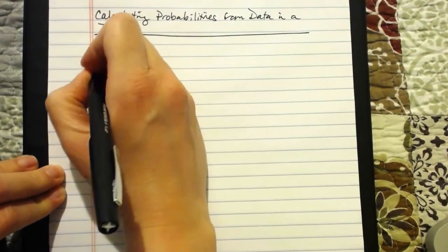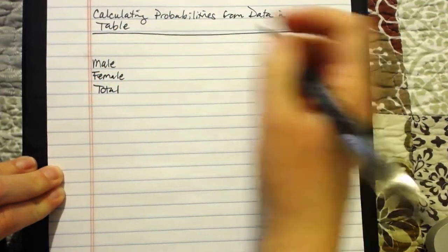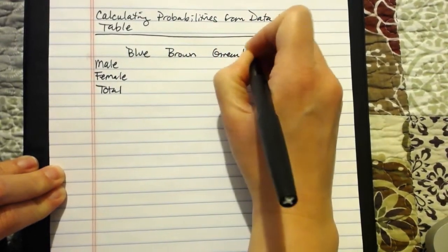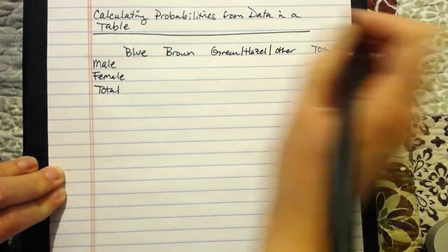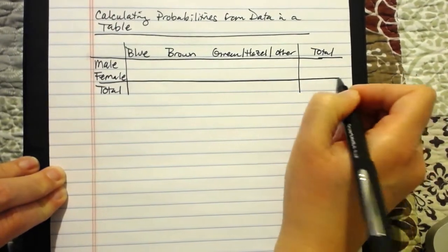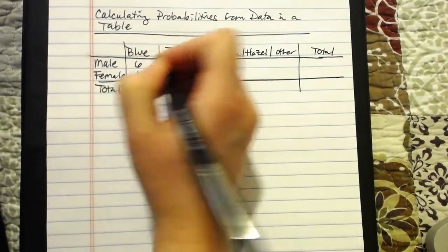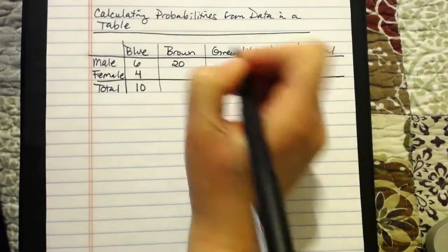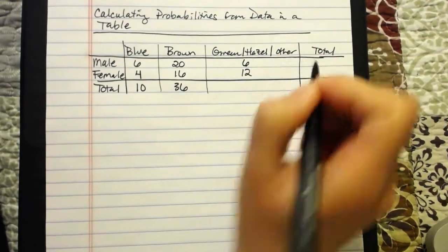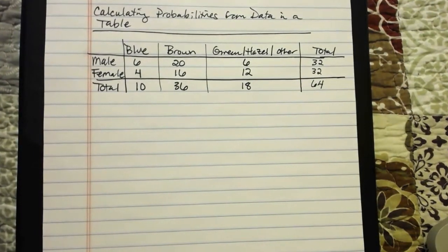Here's the table we're going to be working with. We're going to have three rows: male, female, and total. Then there's eye colors across the top: blue, brown, green, hazel, other, and total. There were 6 males with blue eyes, 4 females with blue eyes for a total of 10 blue-eyed students. 20 brown-eyed males, 16 brown-eyed females, 36 brown-eyed students. 6 males with green, hazel, or other, and 12 females in that category for 18, which makes the row totals 32 males, 32 females, and 64 as the grand total.